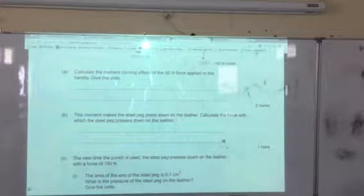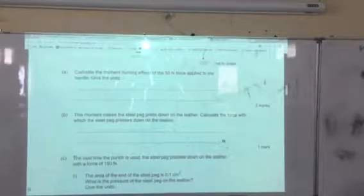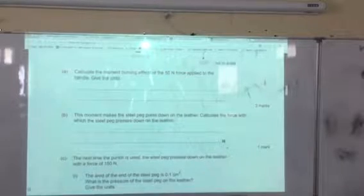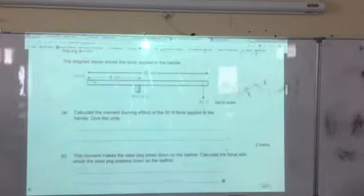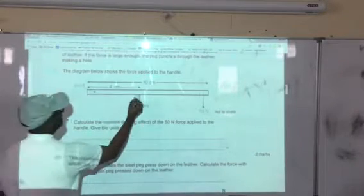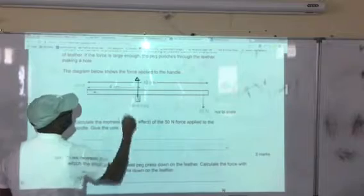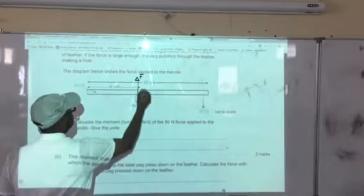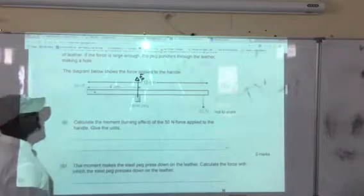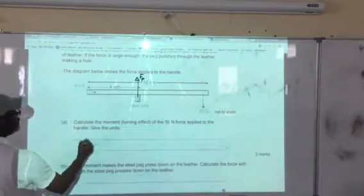Calculate the force with which the steel peg presses down on the leather. We go back to the original diagram. We need to establish the principle of moment. This is the F-peg, which is Fp.